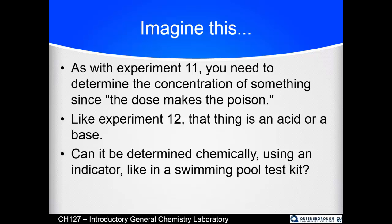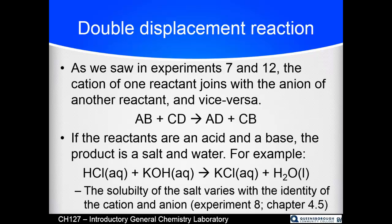We saw the type of reaction known as a double displacement or double replacement reaction, where we swap halves: A goes with the anion from one side, C goes with the anion from the other, and we form two new compounds. If we do this between an acid and a base, we get a salt — not table salt; in this case potassium chloride — and water. This is a neutralization reaction: reacting an acid with a base and ending up with a salt, which is neutral but still an electrolyte if soluble.